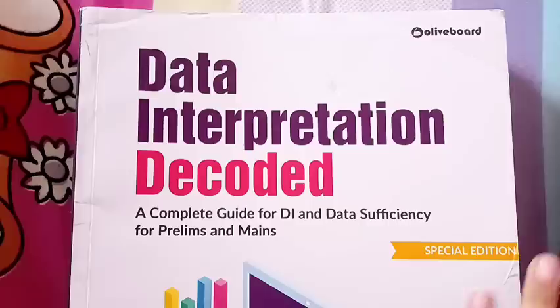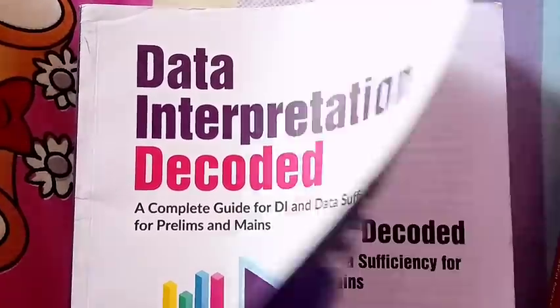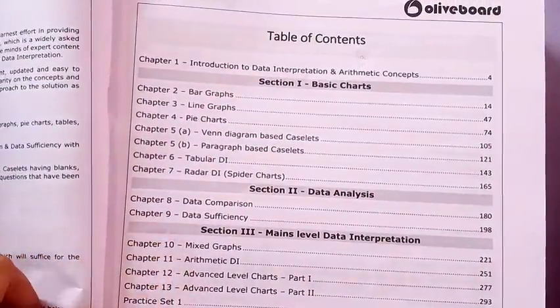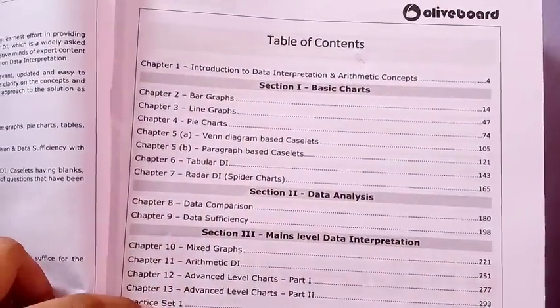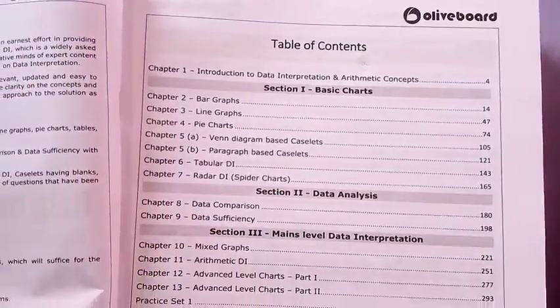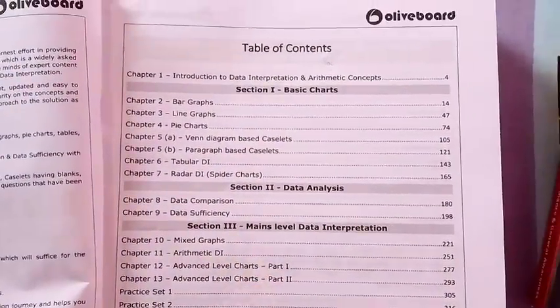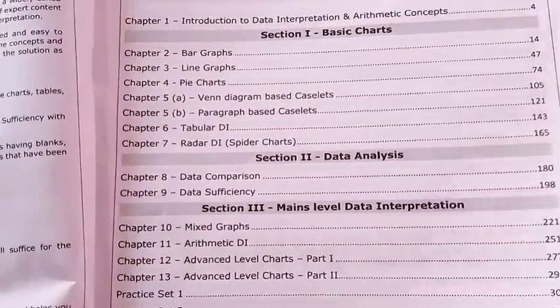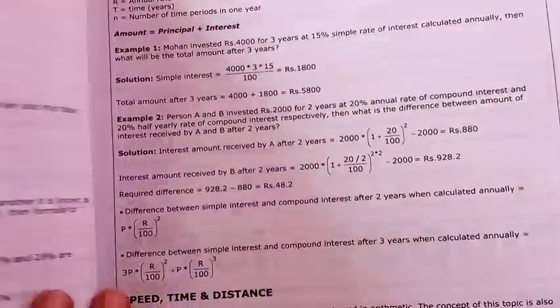After that, this is the second book for DI. It contains all the topic-wise DI like the different types of DIs plus data sufficiency, data comparison, these types of chapters. After that it contains all the types of DIs plus main chapters and advanced level charts. It is a really good book for your mains preparation.